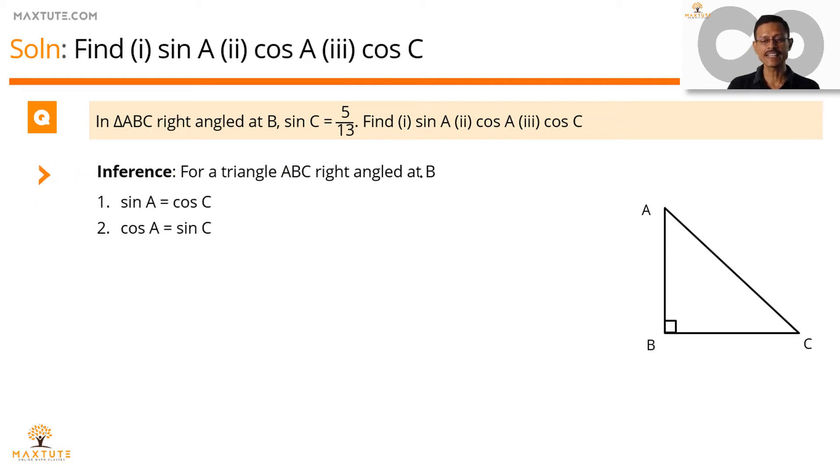In any triangle, right triangle, right triangle at B, you'll find this always working. Sin A will be equal to cos C and cos A will be equal to sin C. Why is this working? We just saw it in the last slide. I'll just reiterate it as we are doing it right now.